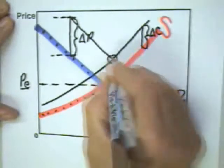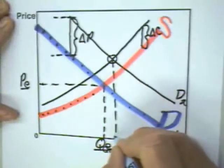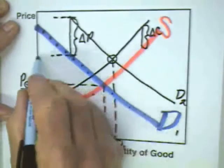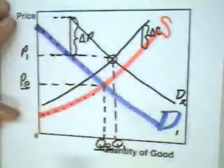We know that the market is going to move to this position, where the quantity consumed and produced will be Q1, and the price will be P1.